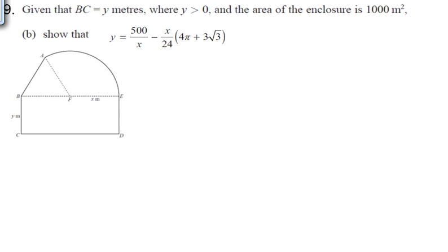We're looking at the C2 2016 May paper, question 9, part B. Given that BC equals y metres, where y is greater than 0, and the area of the enclosure is 1,000 metres squared, show that this equation is true.